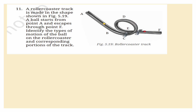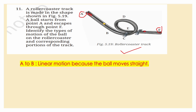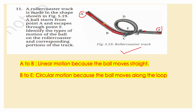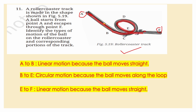A roller coaster track is made in the shape shown in figure 5.19. A ball starts from point A and escapes through point F. Identify the types of motion on each portion: A to B — linear motion, because the ball moves straight. B to E — circular motion, because the ball moves along the loop. E to F — linear motion, because the ball moves straight again.